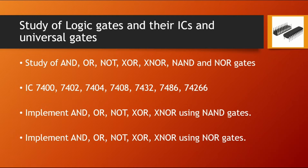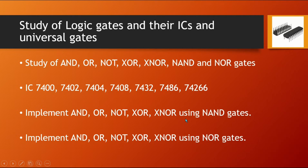The logic gates are AND, OR, and NOT. Amongst those, there are some basic gates and then there are some combinational gates. These are the IC numbers that are used for the AND gate, OR gate, etc. We are going to implement these gates on a breadboard in terms of circuit.